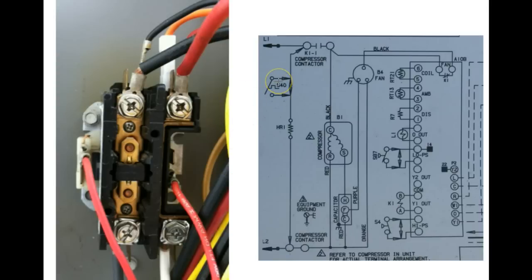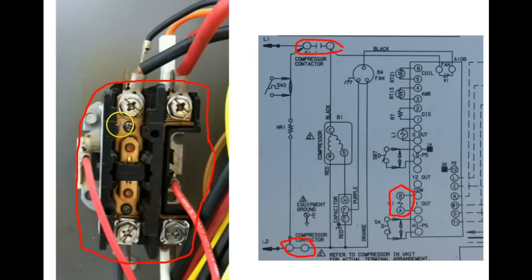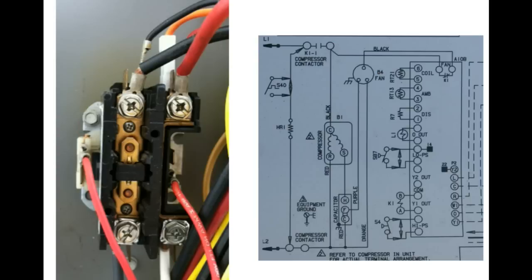Once again, on schematic diagrams, contactors and relays are represented as what looks like three different devices when in actuality it's just one. We'll go over this again and cover how, when the contactor is actuated, the current path follows to turn on the compressor and the condenser fan. We'll complete the schematic diagram lesson in the next video. If there are any questions, let me know in the module forum or send me a private message on the online classroom.